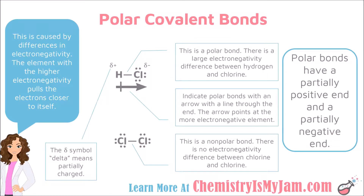A polar bond is a bond that has a positive end and a negative end. For example, hydrogen and chlorine are pretty far apart on the periodic table. Chlorine is very close to fluorine, so chlorine has a high electronegativity, while hydrogen has a low electronegativity. So chlorine is pulling the electrons to itself, giving chlorine a partially negative charge and hydrogen a partially positive charge. There is a large difference in electronegativity, making this a polar bond.